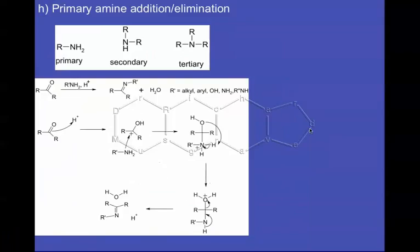We're going to now take a look at primary amine addition elimination reactions. First of all, let me remind you what a primary, secondary and tertiary amine look like. A primary amine has an NH2, a secondary amine has an N with 1H, and a tertiary has an N with no Hs.